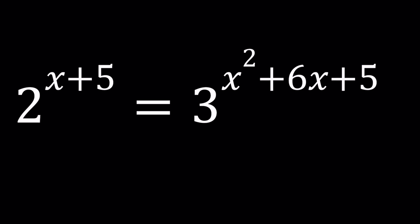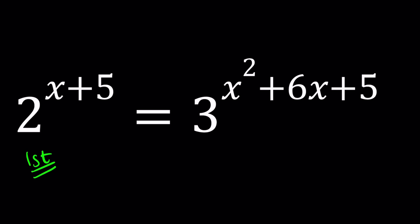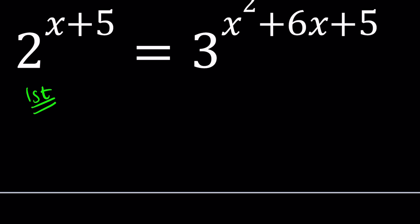Now let's go ahead and take a look at this problem in two ways. First method, I'm going to go ahead and bring those exponents down because, as it is, it looks pretty complicated. So if you can use logarithms — it doesn't matter which base you use — I'm going to use natural log. So let's go ahead and ln both sides. ln happens to be the natural logarithm, which is base e.